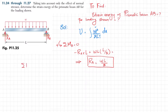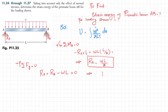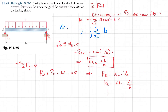Using another equilibrium condition, sum of all forces along the y-direction equal to zero, taking upward forces as positive: Ra + Rb − w·L = 0. From here, Rb = w·L − Ra = w·L − wL/2, giving Rb = wL/2. Now we have both reaction forces.